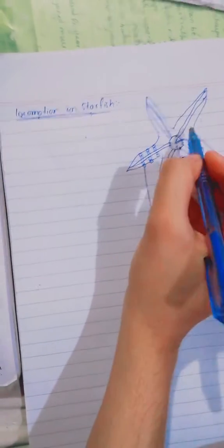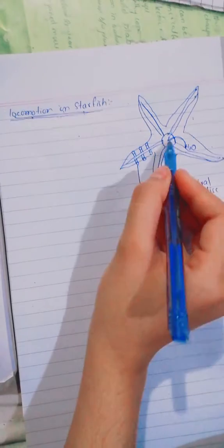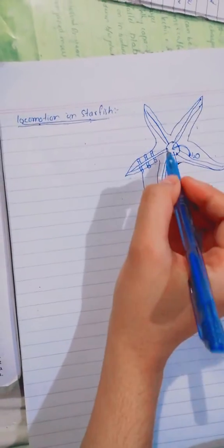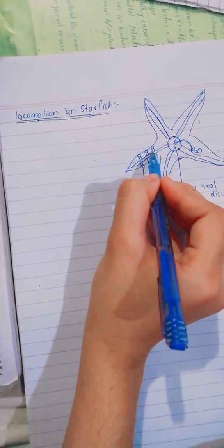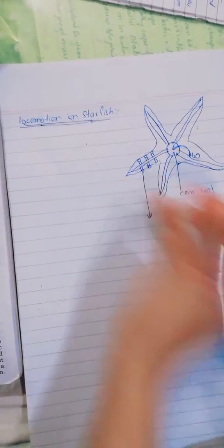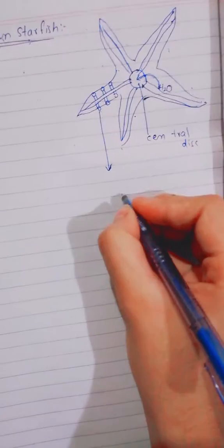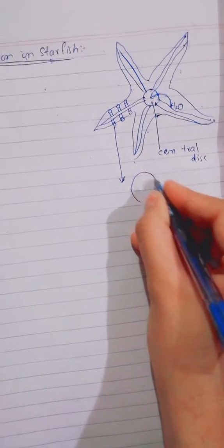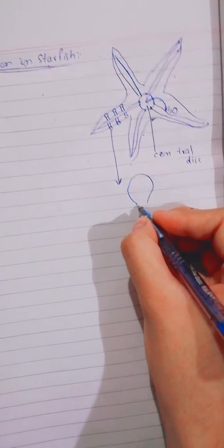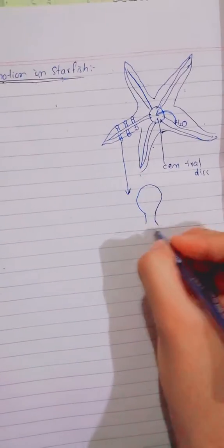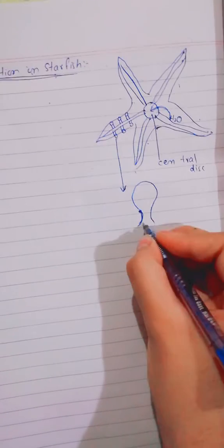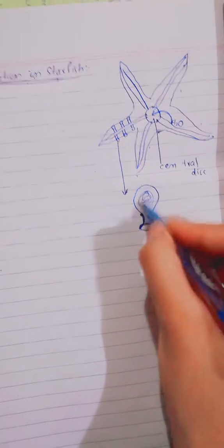Then the water goes into the ampule. Ampule is like a ball-like sac, it is muscular and it has a sucker attached. When water comes in, maximum 150 of these are called tube feet, so maximum 150 tube feet are in one arm of starfish.